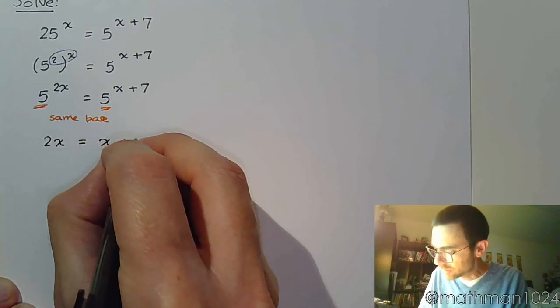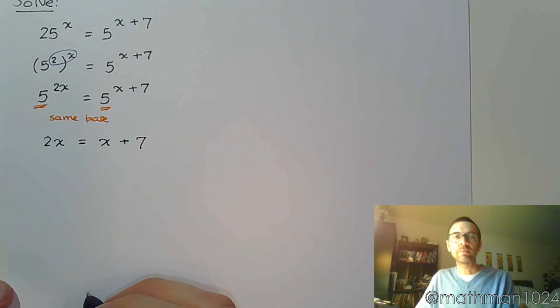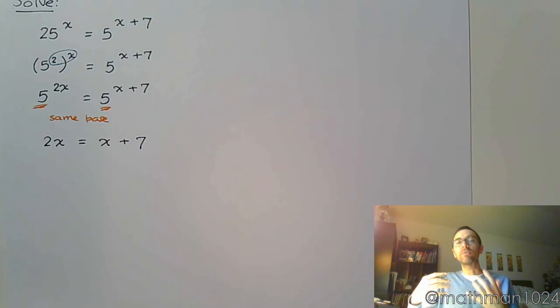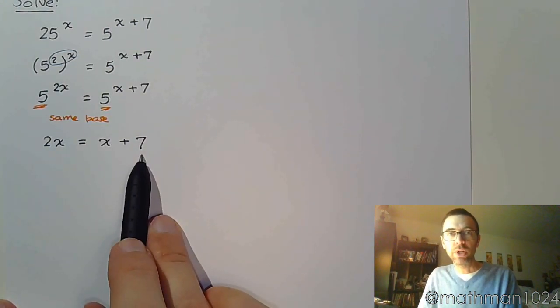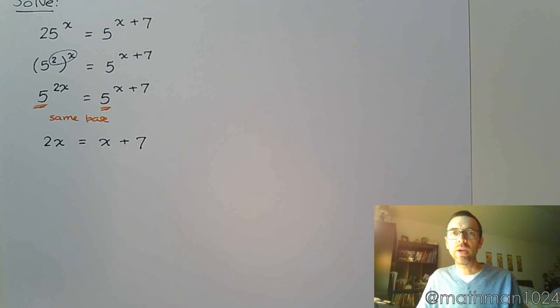So 2x = x + 7. Once you have your variable no longer in the power but down on the normal level, you just look at the equation that you have. Right now we see that we have a linear equation.